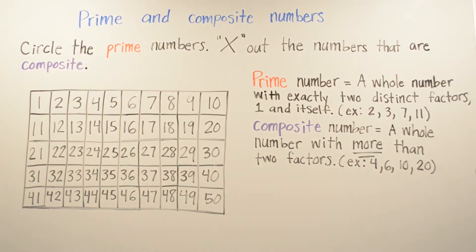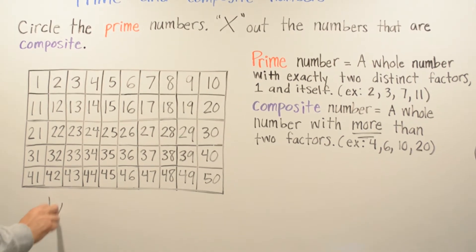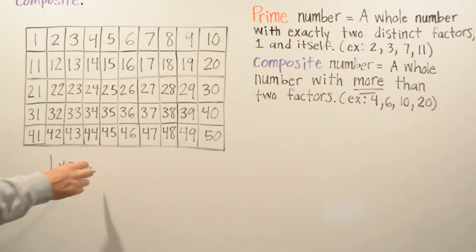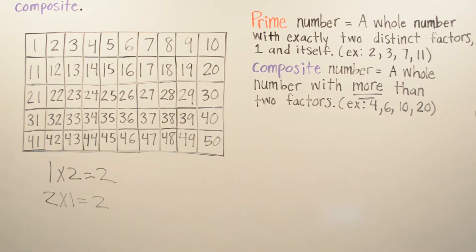We're going to talk about what numbers can be multiplied together to give me 2. The two ways to multiply to get 2 are: 1 times 2, which is 2, or 2 times 1, which is 2. There's no other way to get 2 — those are the only two ways. So because of that, 2 is going to be a prime number.